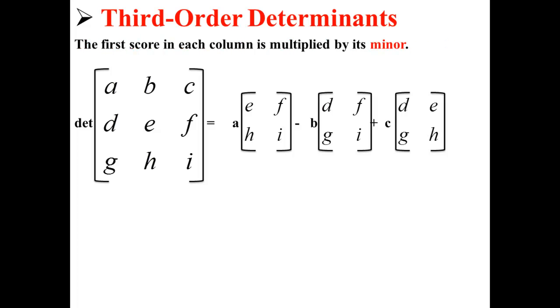The first score in each column is multiplied by its minor. So for example, here's how we get the first part. We multiply A by E, F, H, I. Next, we multiply B by D, F, G, I. And third, we multiply C by D, E, G, H.